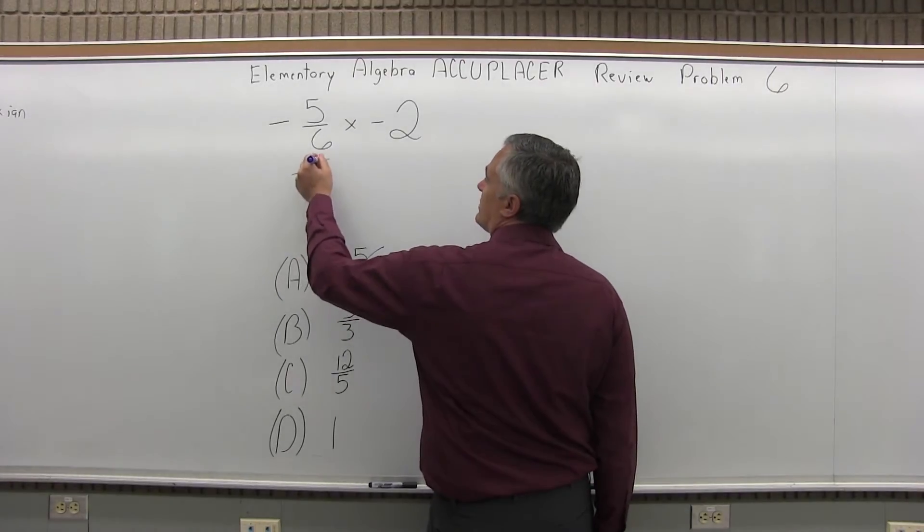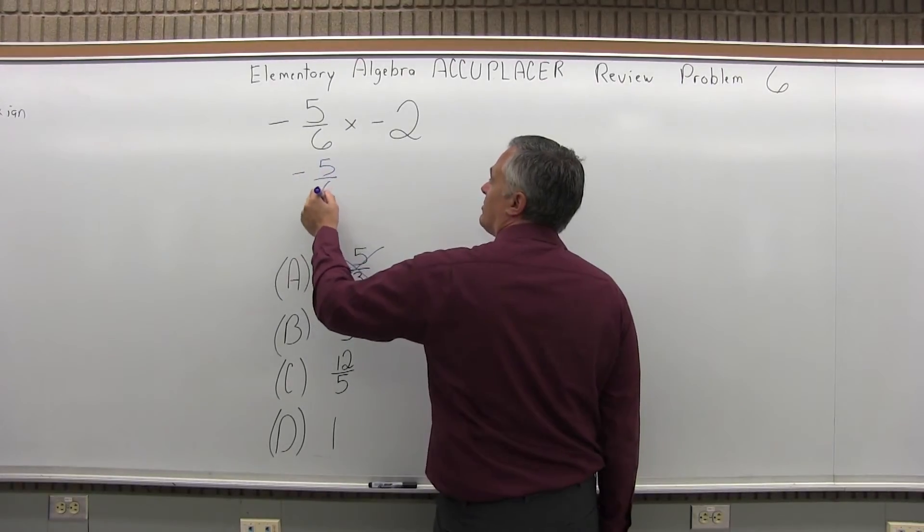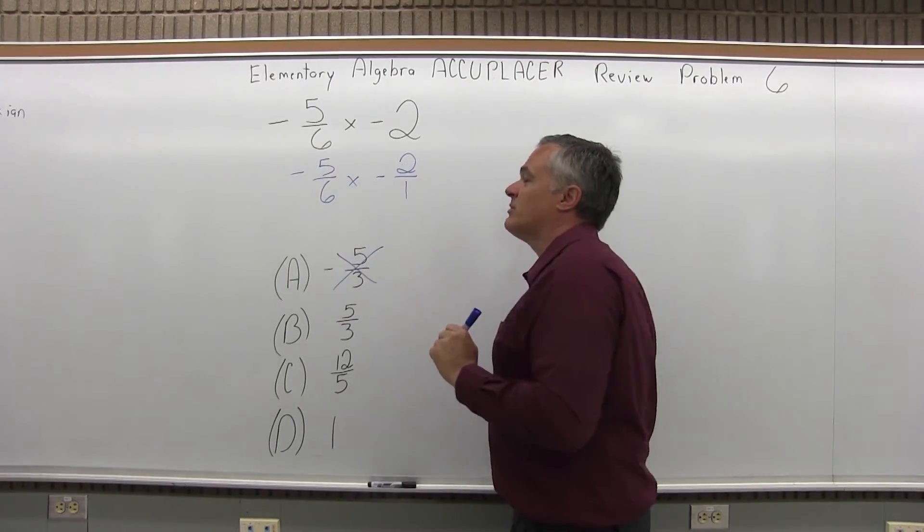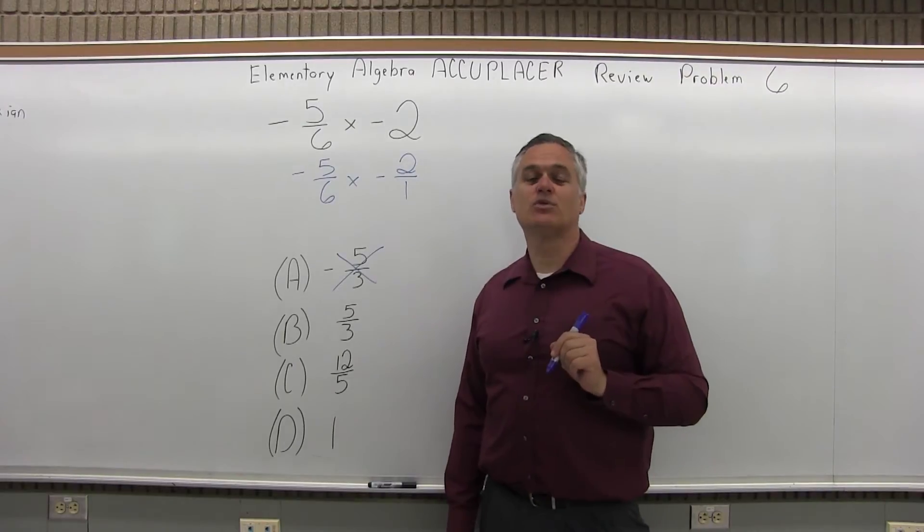The negative 5 over 6 is good the way it is, but when I multiply fractions, I want both fractions to have a numerator and a denominator. So I'm going to change the negative 2 to a negative 2 over 1.